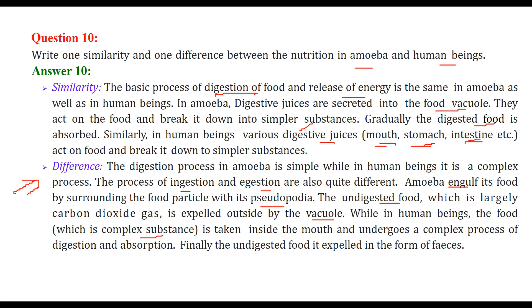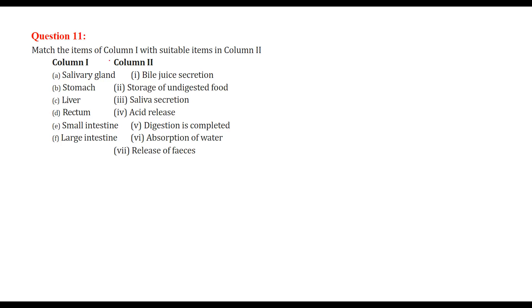The undigested food, which is largely CO2, carbon dioxide gas, is expelled outside by the vacuole. What happens in human beings? The food, which is a complex substance, is ingested or taken in through the mouth and it undergoes a complex process of digestion and absorption. Finally, the undigested food goes out in the form of feces.